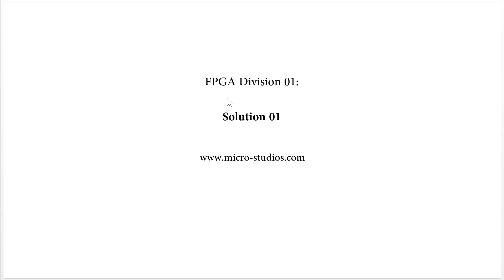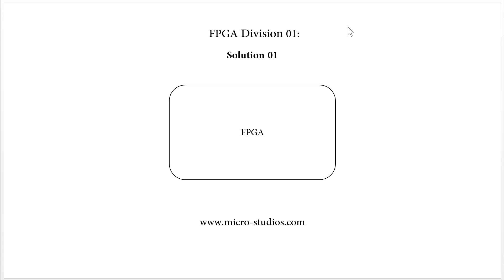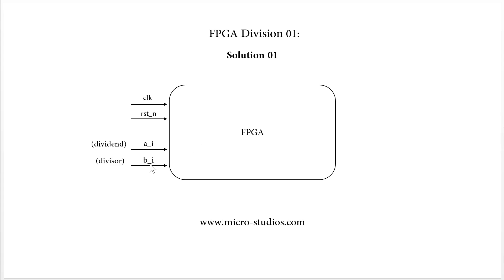For the FPGA division, the first thing is we need one FPGA. For the FPGA, we will have one clock input and one reset input. Also, we will have one data input — it is the dividend. And another input, it is the divisor. Of course, we will have one output, and it is the quotient. And another output, it is the remainder.